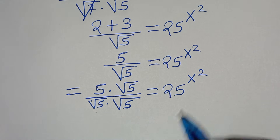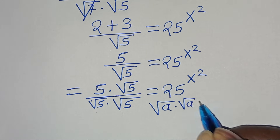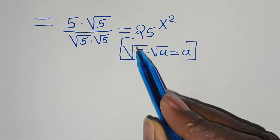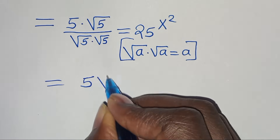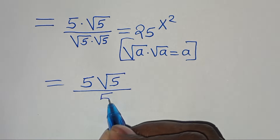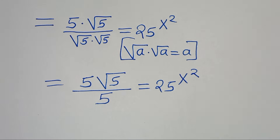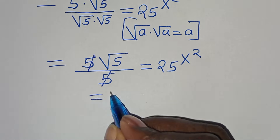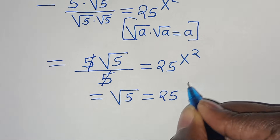Now the square root of 5 times the square root of 5 is in the form of square root of a multiplied by square root of a, which gives us a. Since the square root of a times the square root of a equals a, we have 5 multiplied by the square root of 5 divided by 5. We can simplify 5 and 5, so that now we have the square root of 5 equals 25 raised to the power of x squared.